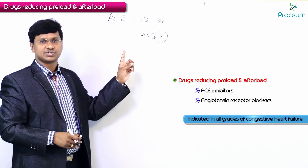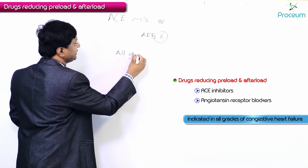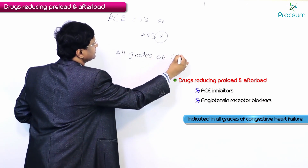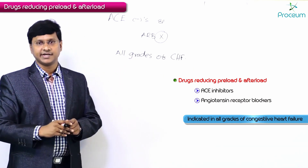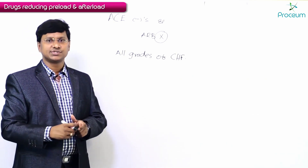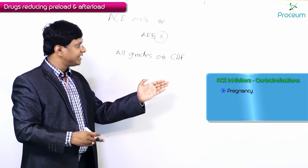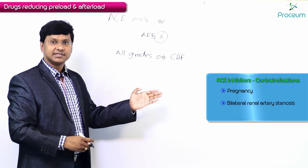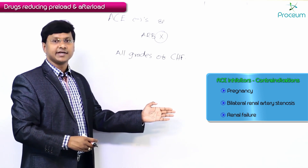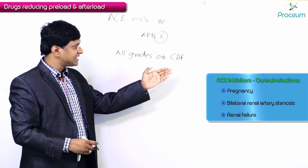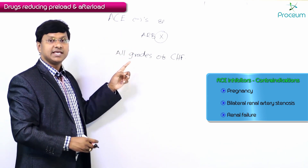These drugs are indicated in all grades of congestive heart failure unless contraindicated. The contraindications for ACE inhibitors and ARBs are: pregnancy, bilateral renal artery stenosis, and renal failure. Unless these contraindications are present, ACE inhibitors and ARBs are given in all grades of congestive heart failure.